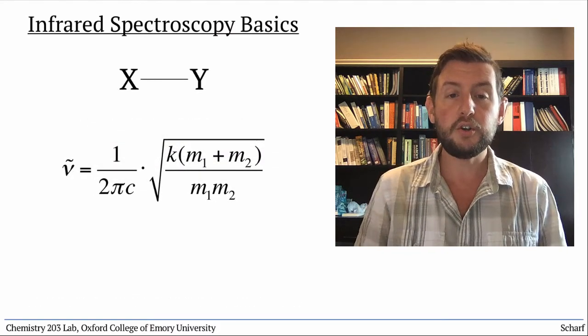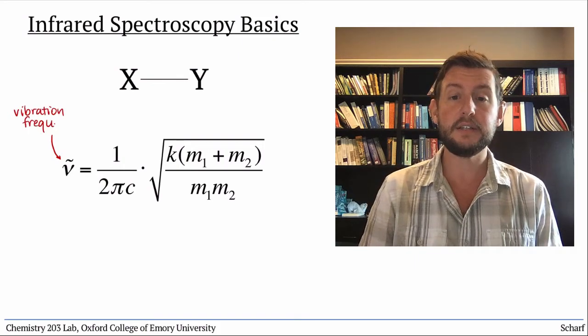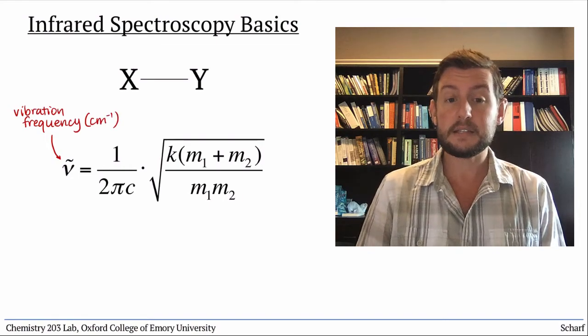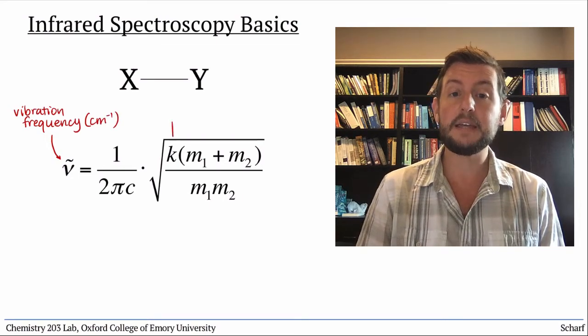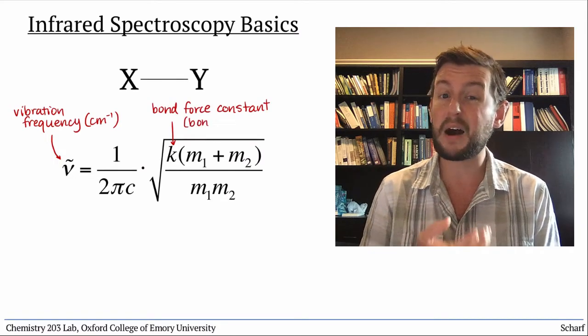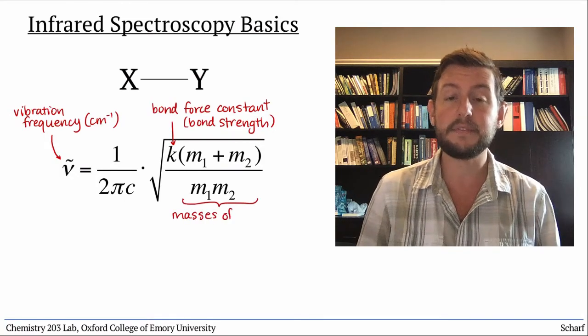Where nu with a tilde is the frequency of a bond vibration in units of wave numbers or inverse centimeters. C is the speed of light. K is called the bond force constant and is a measure of bond strength. And M1 and M2 are the masses of the atoms.